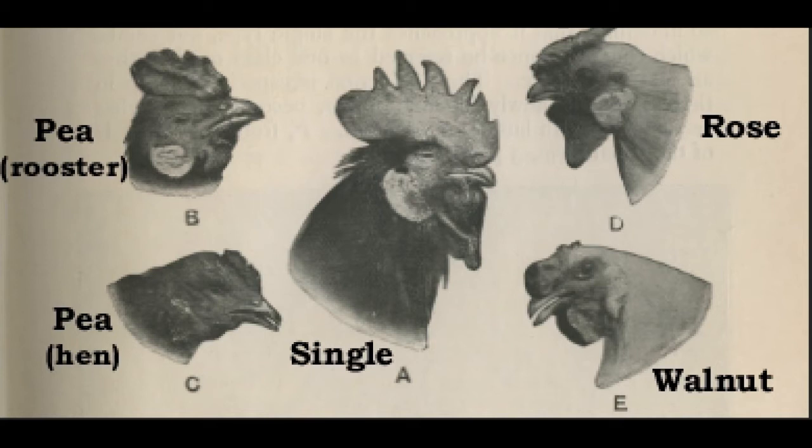When pure breeds of chickens with a rose comb were crossed to pure breeds with a pea comb, all of the F1 chickens had a different shaped comb, which they referred to as walnut.